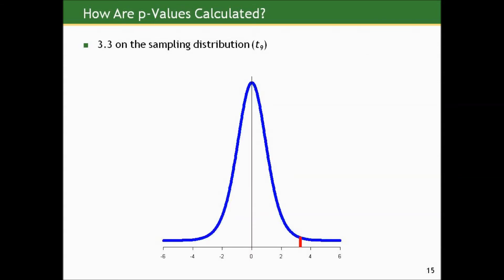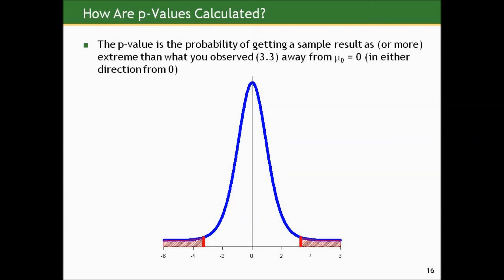Is a result 3.3 standard errors above its mean unusual? On a sampling distribution, that's pretty far out in the right tail. The p-value is the probability of getting a sample result as or more extreme than what we saw away from mu equals zero — basically the proportion of samples of size 10 that would give sample means 3.3 or more standard errors away from zero in either direction, if zero were the true mean. We want that area under the curve shaded in red.